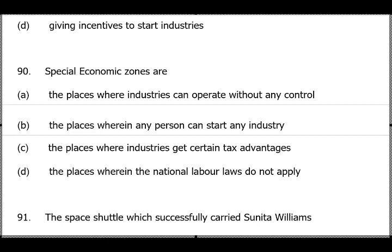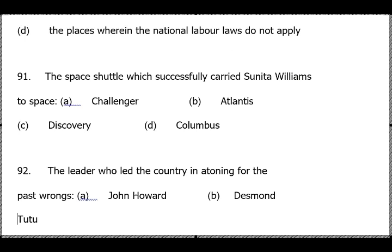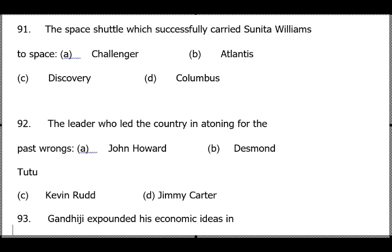Question 90: Special Economic Zones are areas where trade laws are more lenient and barriers are reduced — places where industries get certain tax advantages — answer is option C. Question 91: Space shuttle — as mentioned earlier, Sunita Williams went to space by Discovery. Kalpana Chawla died while returning to Earth on Columbia.